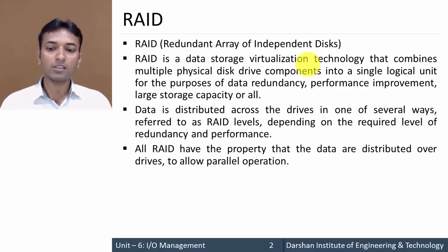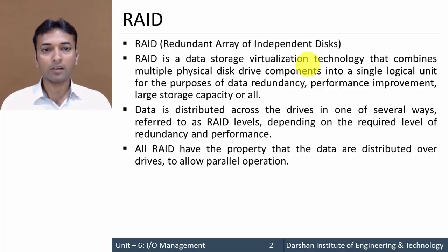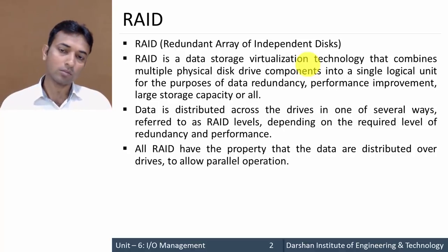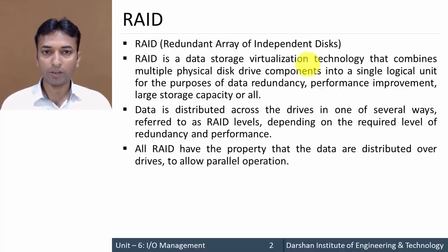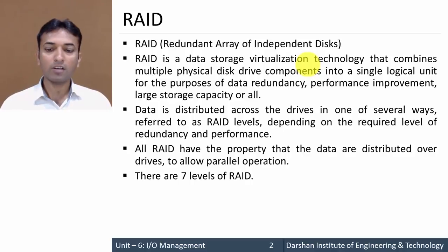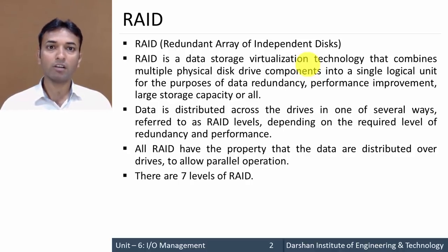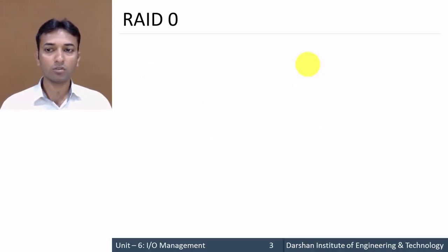All RAID levels have the property that data are distributed over the drives to allow parallel processing or parallel operation. There are 7 levels of RAID. Let us see each and every level one by one.